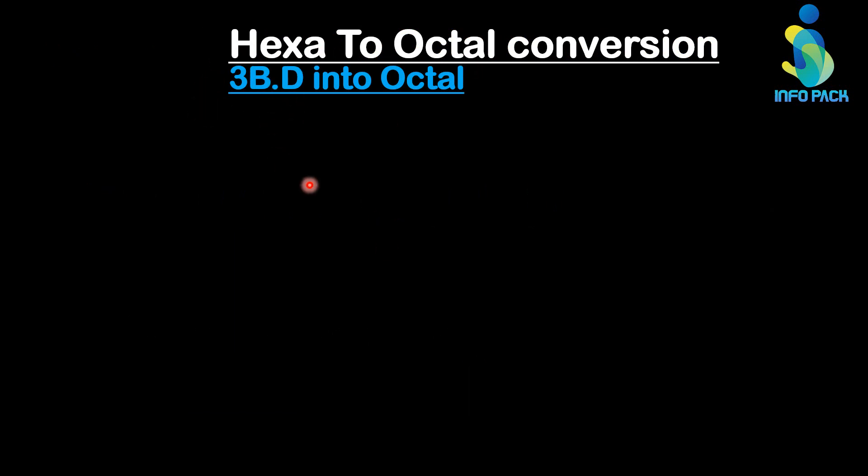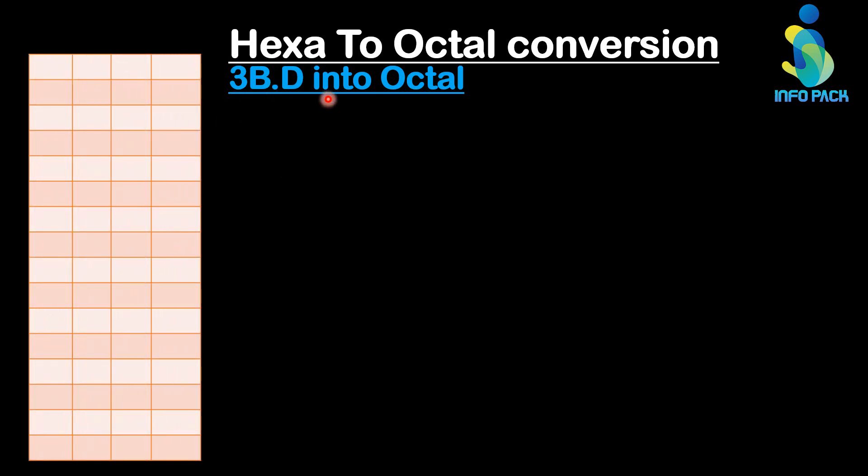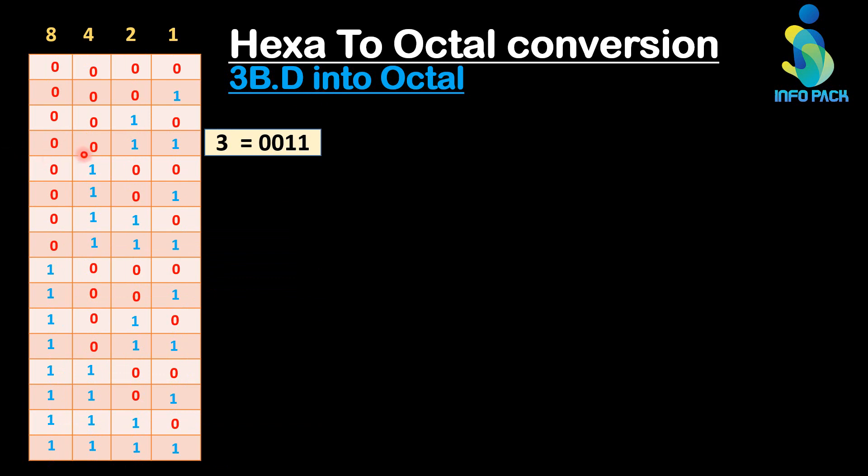Here is a fractional number. Take the binary of 3, B, and D by using hexadecimal binary table. The binary of 3 is 0011, the binary of B is 1011, and the binary of D is 1101. Here we are taking 4 digits in one group because the base of hexadecimal number is 16.